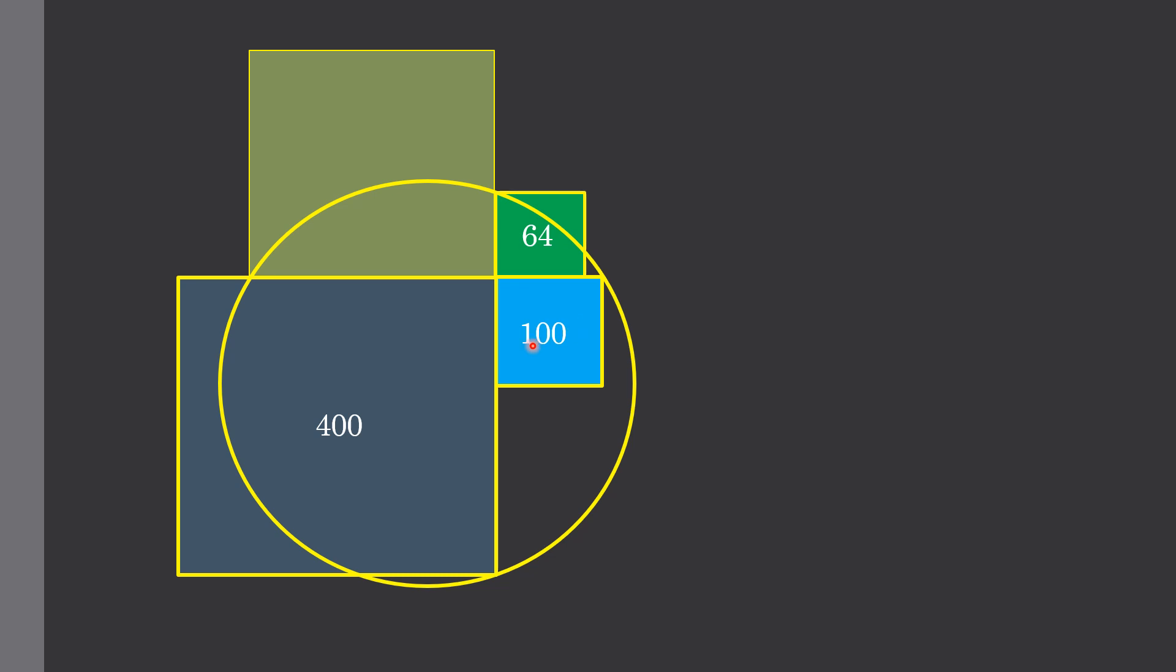This blue square has area equal to 100 square units. We know that the area of a square is equal to the square of its side. Thus, the side length of this square is equal to 10 units. On the same line, this square has side length equal to 8 units.